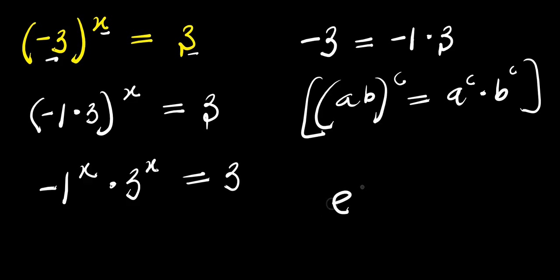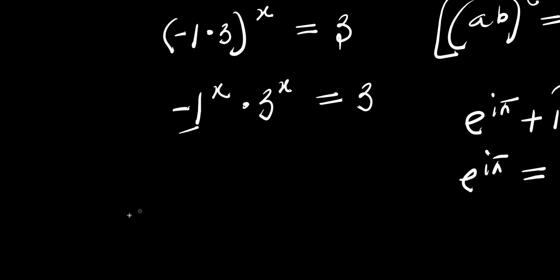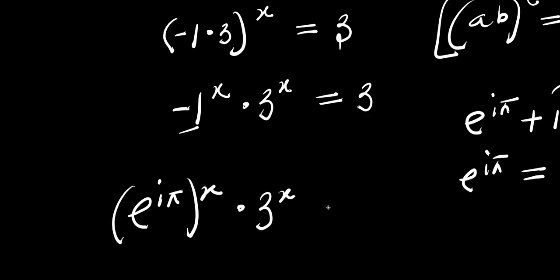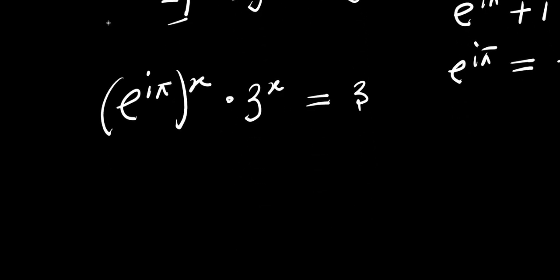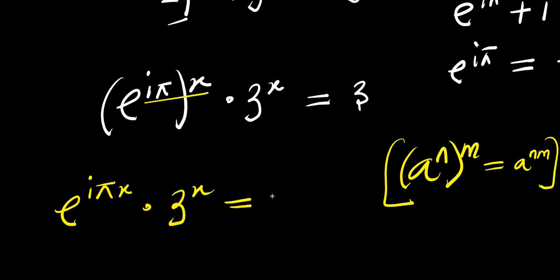Now, from Euler's identity, e to the power i times pi plus 1 equals 0, which gives us e to the power i times pi equals negative 1. Since there is a negative 1 here, I can replace it with e to the power i times pi, raised to the power of x, times 3 to the power x equals 3. Using the rule that e to the power n, raised to the power n, equals e to the power n times n, I multiply the exponents to get e to the power i times pi x, times 3 to the power x, equals 3.